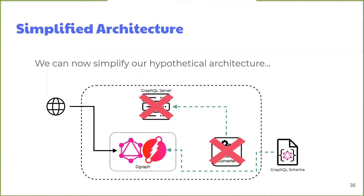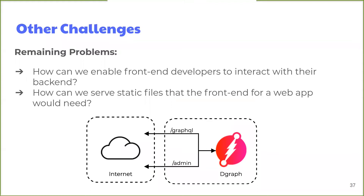With Dgraph accepting a GraphQL schema as an input and generating the GraphQL API, we would no longer need the schema converter to generate a database schema and resolvers, or a separate application server to serve the API. We were able to remove those components from the architecture. However, we had a couple of additional problems to solve. Dgraph exposes administrative endpoints for interacting with the GraphQL schema — such as updating and inspecting the schema — but these shouldn't be accessible from the public internet. We also had no way to upload or serve static files, which a front-end developer is likely going to need.